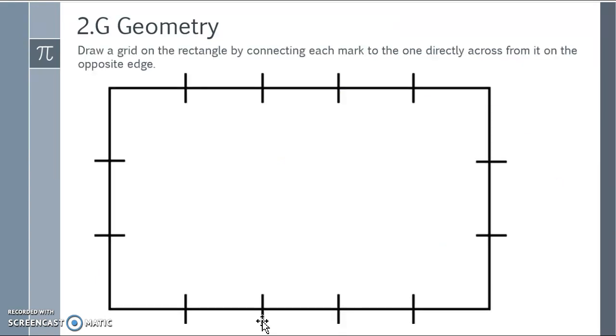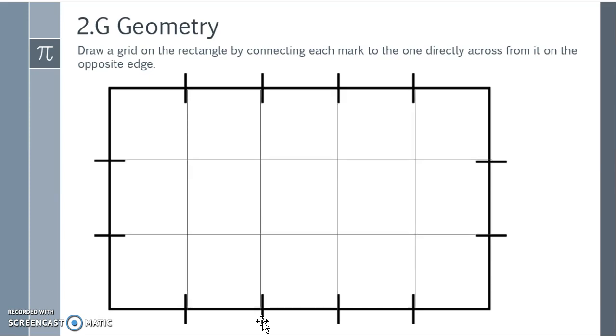Again, I hope you printed off this so that you can do the activity as we go along here. So using the rectangle here with the hash marks, draw a grid on the rectangle by connecting each mark to the one directly across from it on the opposite edge. It should look like this.